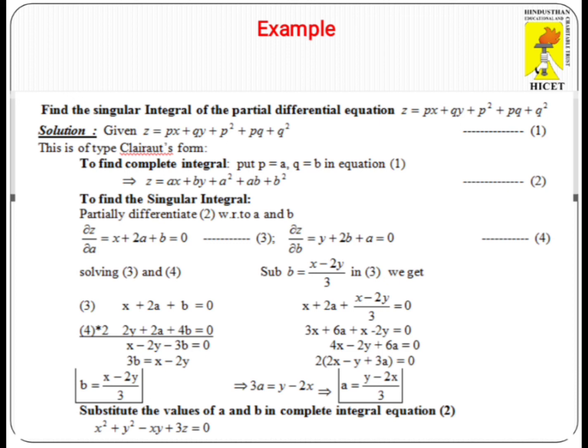Now our question is to find the singular integral. The singular integral means we eliminate the arbitrary constants A and B from the complete integral. We use partial differentiation with respect to A and B and equate to zero, giving X + 2A + B = 0 and Y + 2B + A = 0. Solving these equations, we get A = (Y - 2X)/3 and B = (X - 2Y)/3.